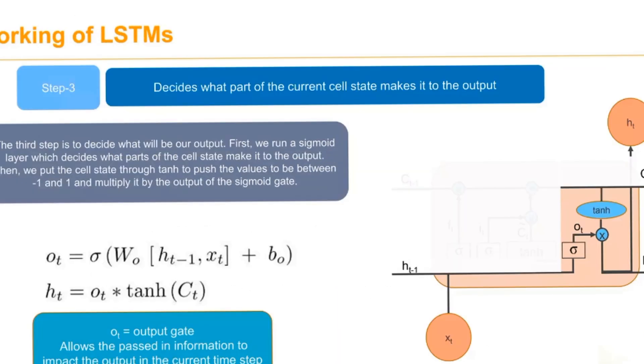The final step decides what part of the current cell state makes it to the output. In step 3, we run a sigmoid layer which decides what part of the cell state makes it to the output.